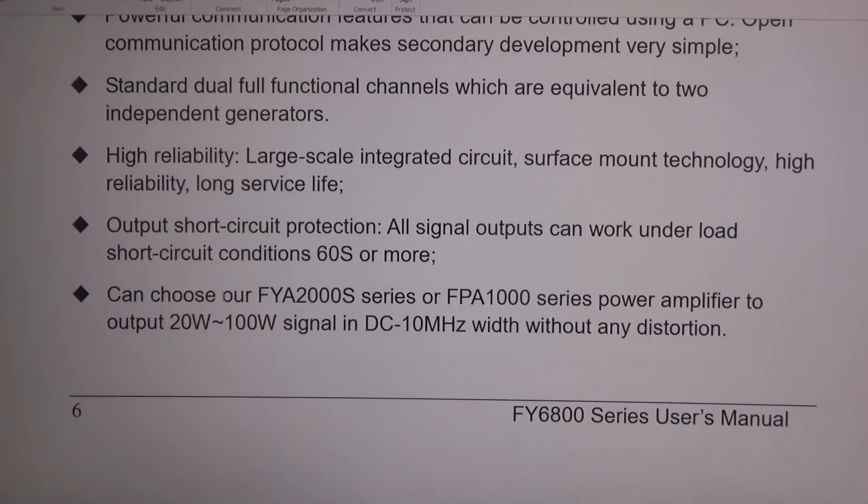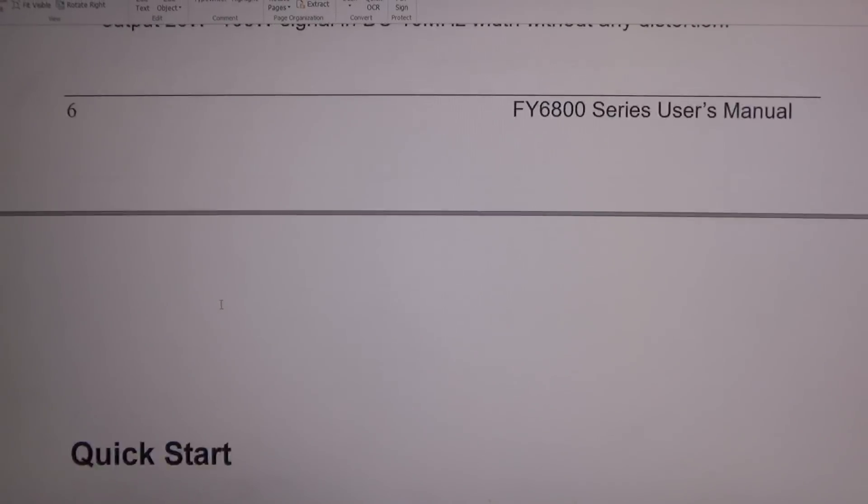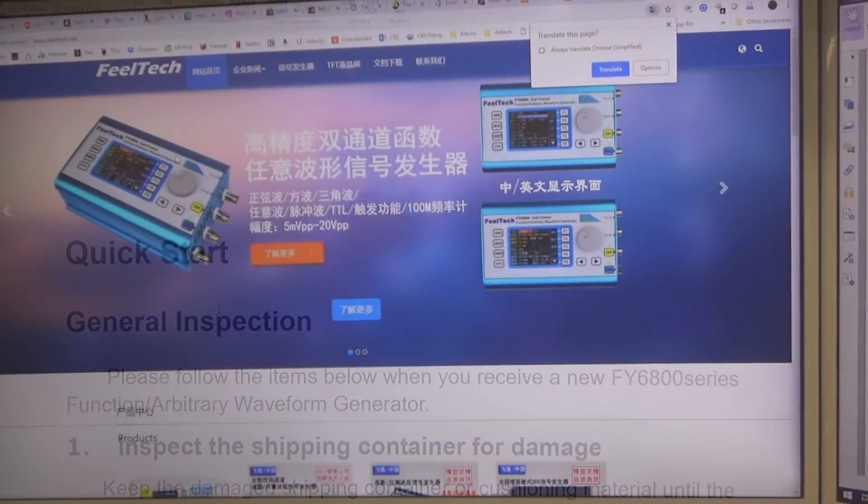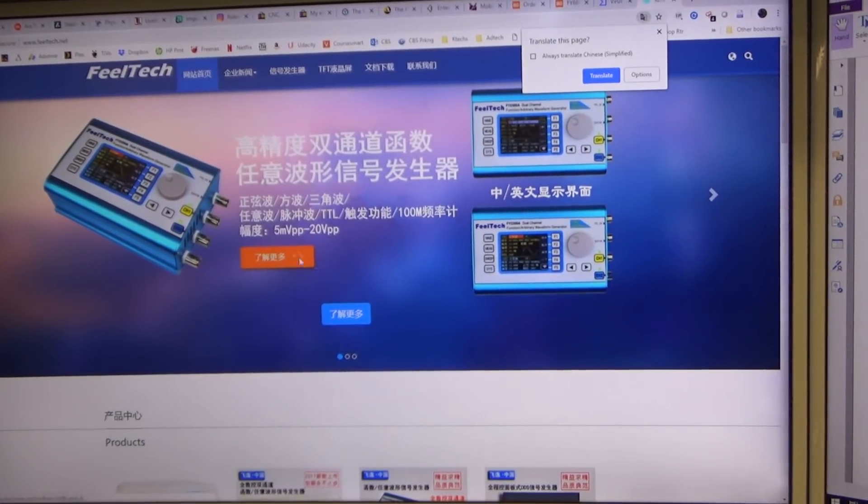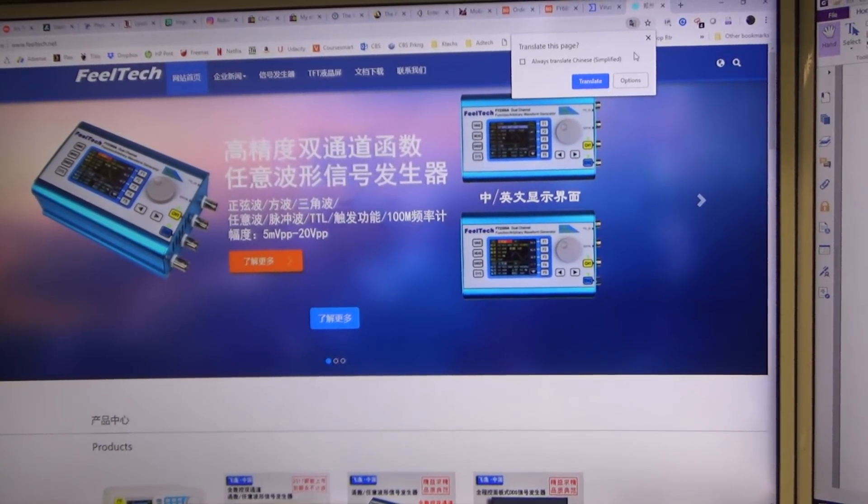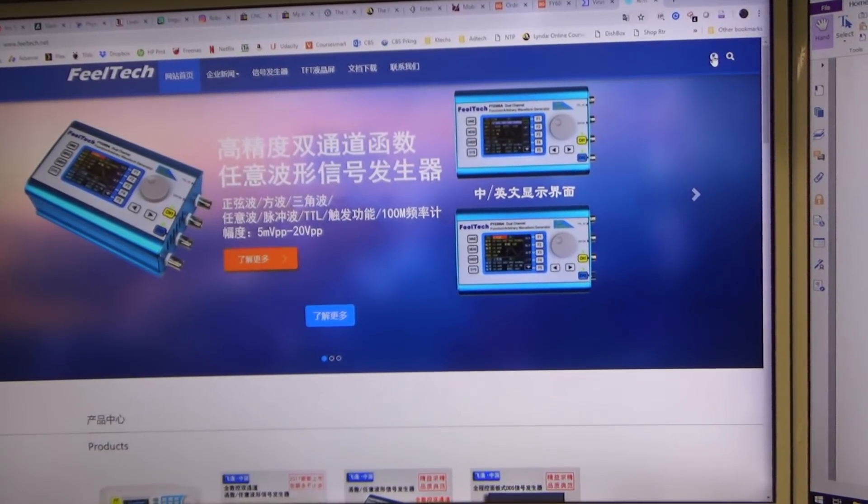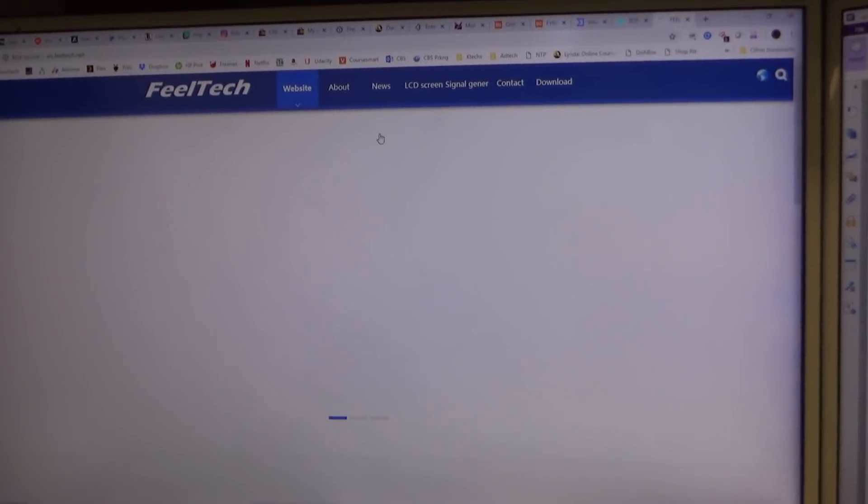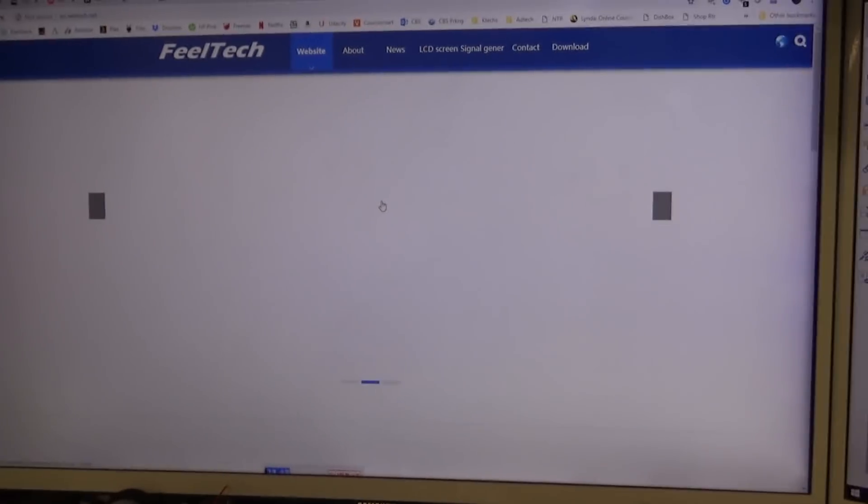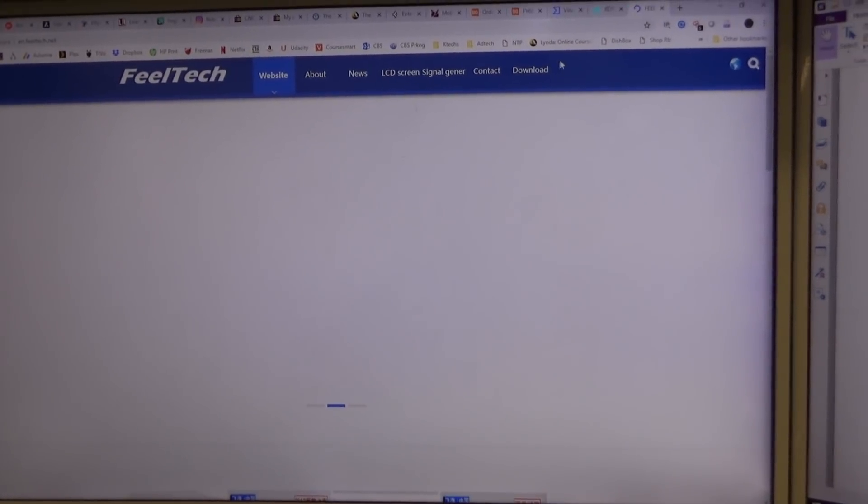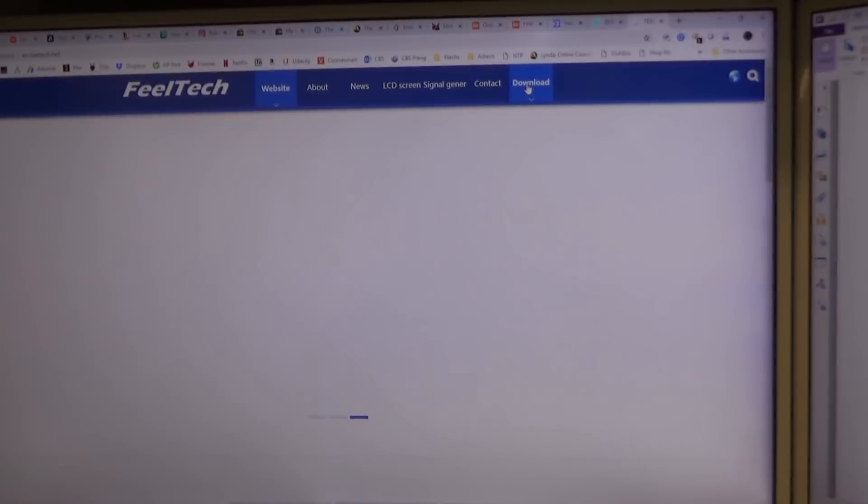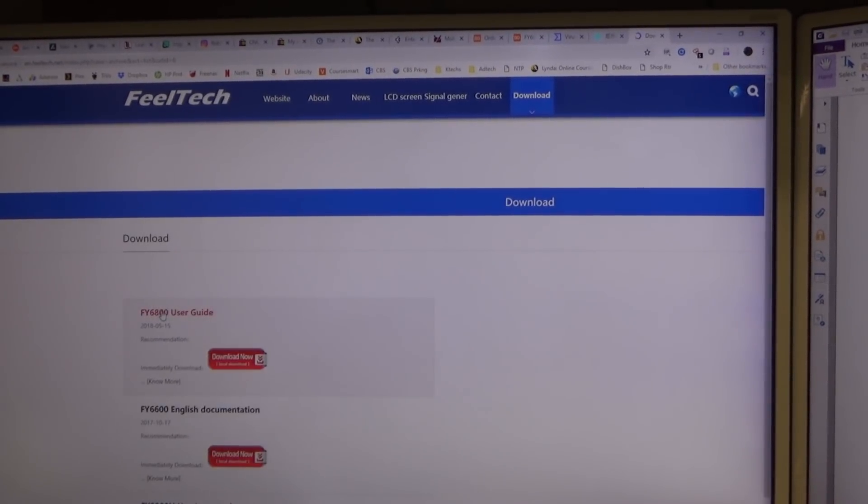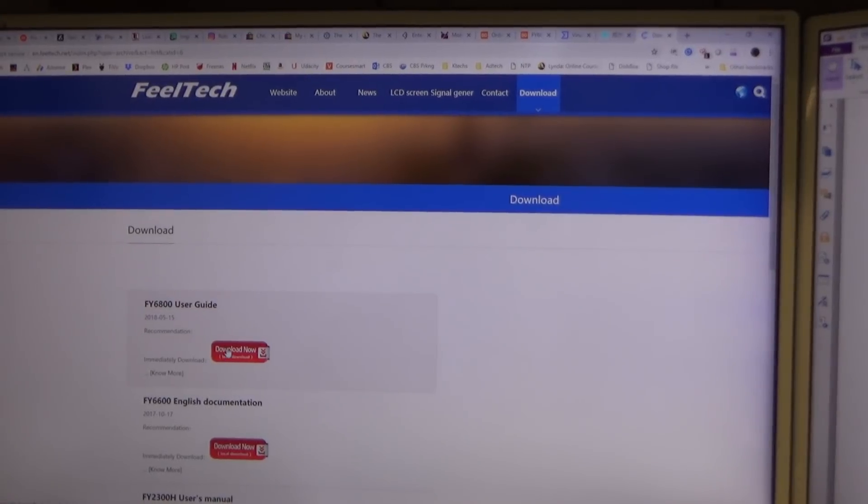When you go to their website I'll show you how you can find the software to download because the English version is a little bit difficult. The link they give you opens up a page that's mostly in Chinese and Google offers the option to translate but if you don't want to do that there's a small world icon in the upper right hand corner if you click on it you can select English and it'll take you to an English version of their website. And here you can download all the versions of the software in English for all their products like the FY6800.